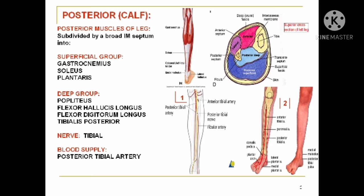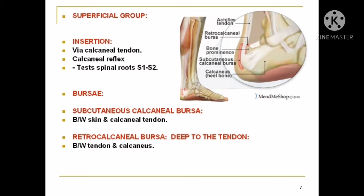The nerve supply is from the tibial nerve. The blood supply is from the posterior tibial artery. The soleus and gastrocnemius muscle share a common tendon and insert upon the calcaneal bone. The calcaneal reflex is the test for assessment of S1 and S2 roots. The bursae between the skin and the tendon, and between the bone and the tendon, are called the subcutaneous calcaneal bursa and the retrocalcaneal bursa. These bursae avoid friction of the tendon against the skin and against the bone.